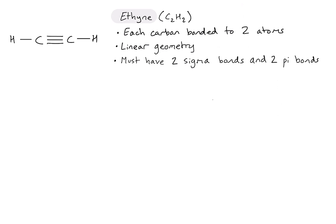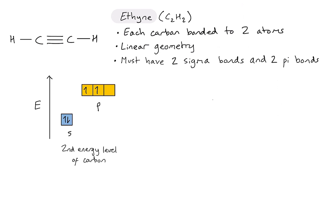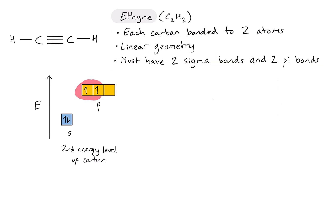Going back to the original problem: at this stage if we're trying to form just two sigma bonds, we have two half-filled orbitals to do so. But if carbon just used those orbitals as they are, we would not get the formation of pi bonds. For a pi bond to form, we need p orbitals containing an electron overlapping. So we still need to suggest hybridization here — we want to form two hybrid orbitals for the two sigma bonds, and then we should have two p orbitals left over to form the two pi bonds.